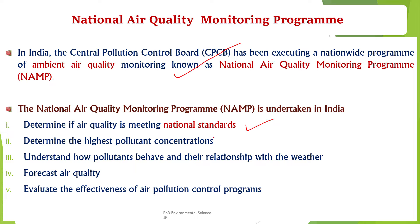The third objective is to understand how pollutants behave and their relationship with the weather. NAMP collects data on how different pollutants behave under various weather conditions. Understanding this relationship helps in predicting pollution trends and the dispersion of pollutants, and also aids in identifying the impact of meteorological factors like wind, temperature, humidity, and rainfall on air quality.